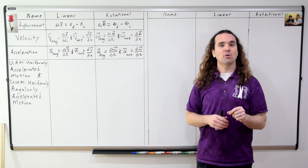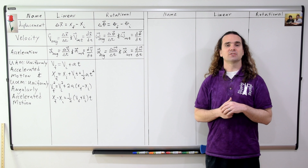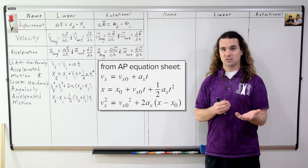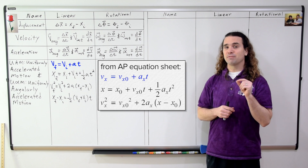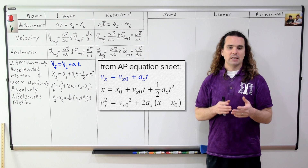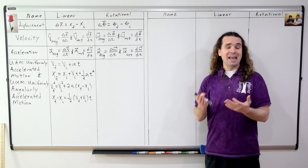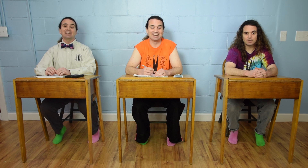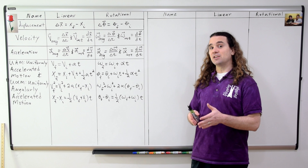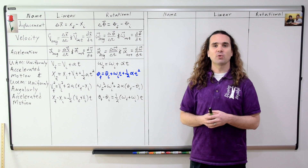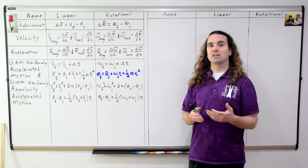Now let's talk about the Uniformly Accelerated Motion, or UAM equations. I've written out the four UAM equations in a form that's not quite the same as what's written on your AP equation sheet. For example, the first equation is velocity final equals velocity initial plus acceleration times time, where that time is defined as time final when time initial is equal to zero. Now let's move on to the Uniformly Angularly Accelerated Motion, or U-Fishy-M equations. The angular U-Fishy-M equations follow the same form as the linear UAM equations. For example, the second U-Fishy-M equation is angular position final equals angular position initial plus angular velocity initial times time plus one-half times the angular acceleration times time squared.